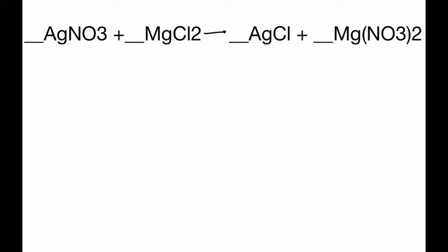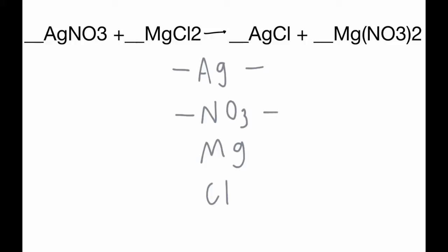In this next example, we set it up the same way. We have Ag, NO₃, Mg, and Cl. We figure out how many we have on each side. On the left we have 1 Ag, on the right also 1. On the left we have 1 NO₃, and on the right side we have 2. On the left we have 1 Mg, on the right also 1.